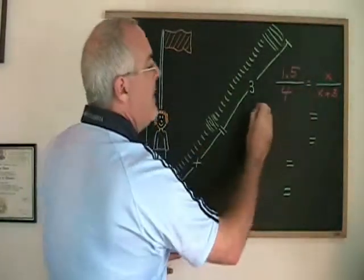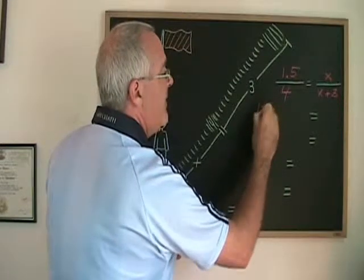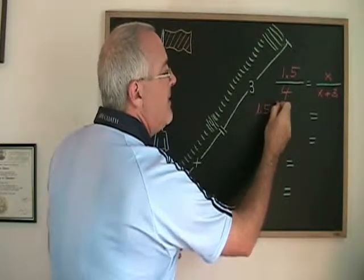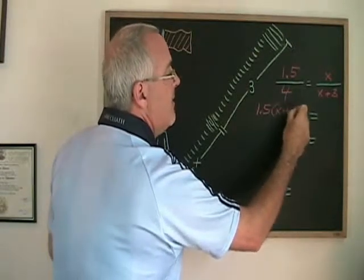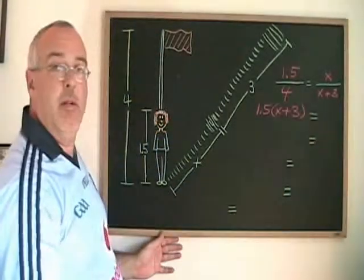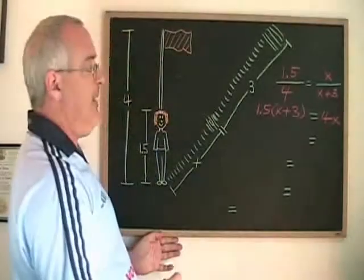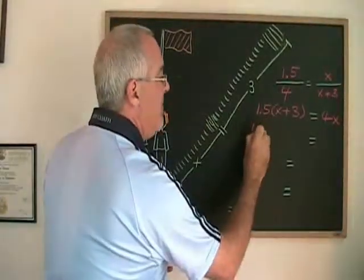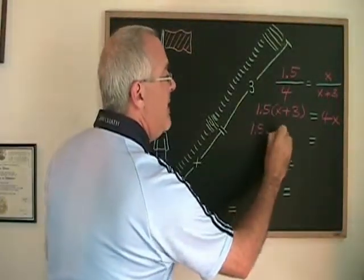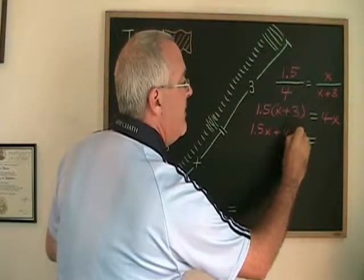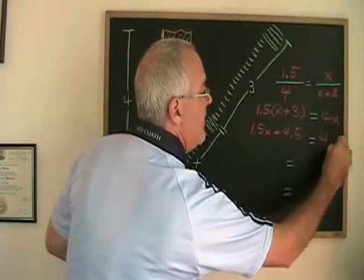Top times bottom gives me 1.5 times x plus 3 and bottom times top gives me 4 times x. Simplifying, this becomes 1.5x plus 4.5 equals 4x.